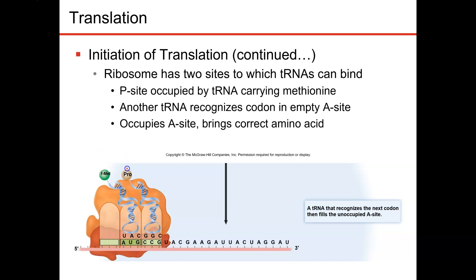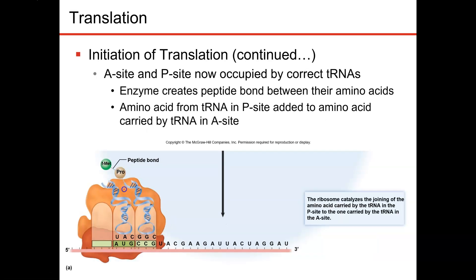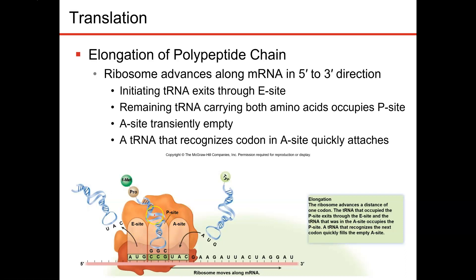Once the methionine attaches, another transfer RNA carrying the next amino acid moves into the A-site. So now we have methionine and proline sitting next to each other. The methionine and proline are going to produce a peptide bond, and the methionine is going to be released from the first transfer RNA and attach to the proline. This first transfer RNA no longer has a job, so it moves to the E-site. The transfer RNA carrying the proline and the methionine moves to the P-site, and the A-site is open for another transfer RNA to come in with its own amino acid.